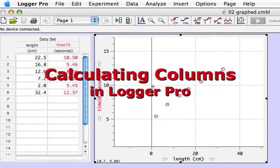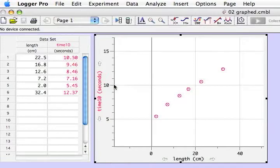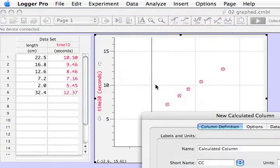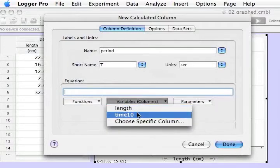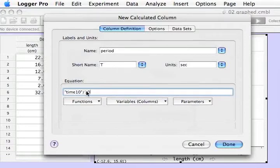We have a table and a graph for our pendulum data, but there's a problem. We still have time 10 on this vertical axis instead of the period itself. We need to create a new calculated column over here in the dataset. So I go to the Data menu and choose New Calculated Column. This brings up the Calculated Column dialog where we put in the name of the new column, which will be period. The short name, which will use capital T. This is still going to be in seconds. Now we put in the equation. You can enter variables using this menu here. I'm going to take time 10. Notice how it appears with quotes. And divide it by 10 in order to get the period. I click done.